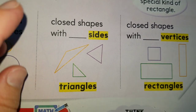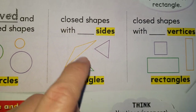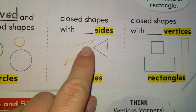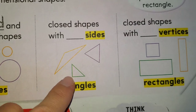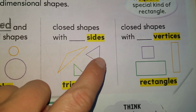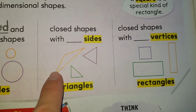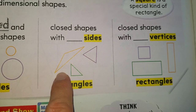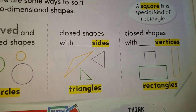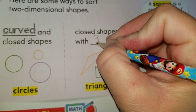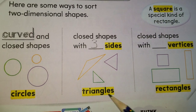Let's take a look at this one — it says 'closed shapes with blank sides.' All of these three shapes have straight sides. How many sides do they have? One, two, three — and the purple shape, one, two, and three — and the last shape, one, two, and three. So all these triangles have something in common — they have three sides. These are closed shapes with three sides; they are called triangles.